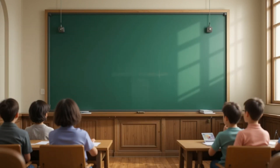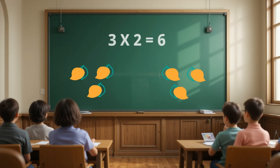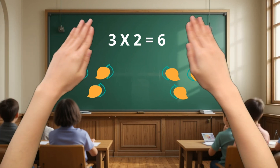Let's try another one. What's three times two? That's right, six, because three groups of two make six.